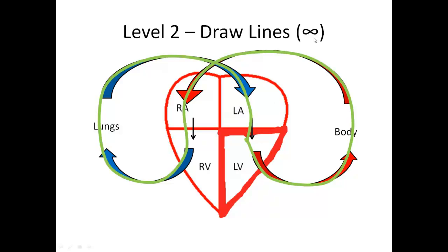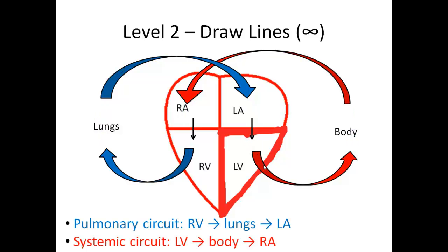The infinity sign has no beginning and no end — you can go down, up, and around, then over, down, up, and around again. This is a simple and easy way to remember how the arrows of blood flow are drawn through the heart diagram.